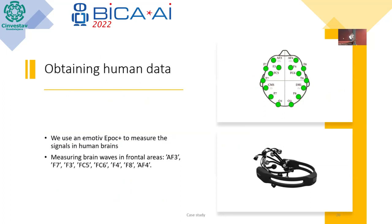To obtain the human data, we used an Emotiv EEG device to measure the signal in the human brain. This is an EEG — electroencephalograph — and it measures brain waves in frontal areas like AF3, F7, F3, F4, etc. We can see the areas in the electroencephalograph.